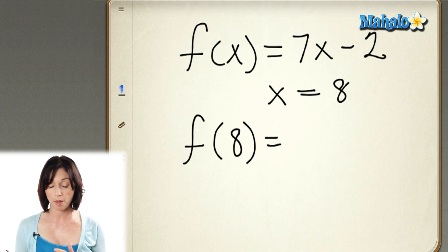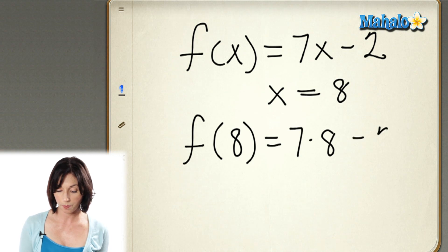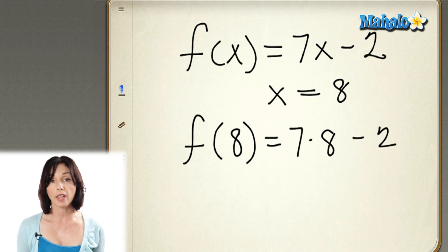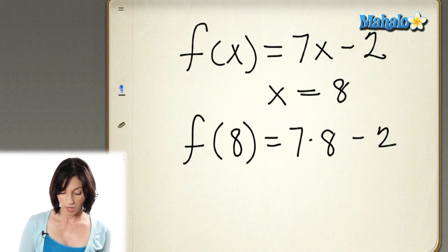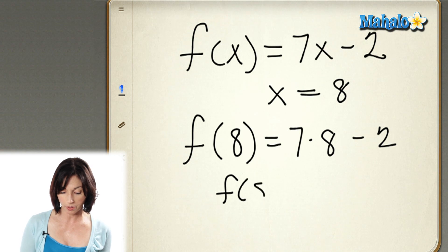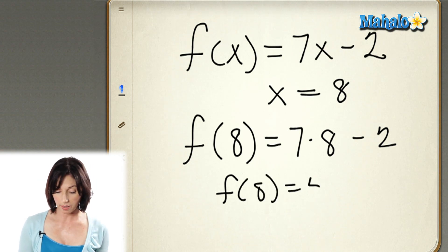So instead of 7 times x, I have 7 times 8 minus 2. Then I just evaluate. So I have that f of 8 equals — 7 times 8 is 56.